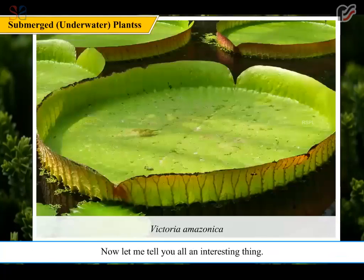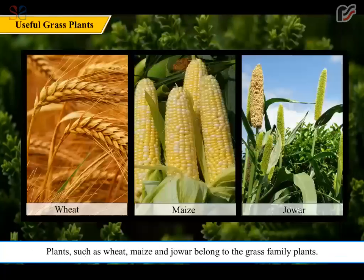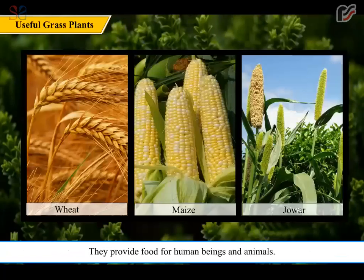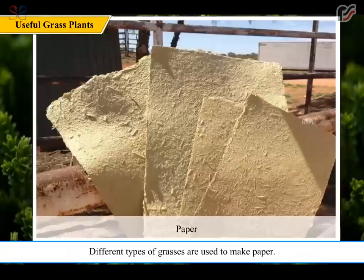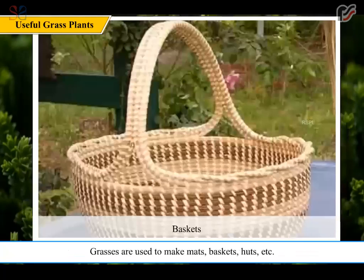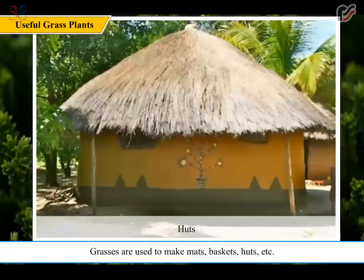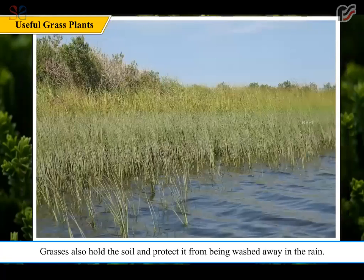An interesting fact: the aquatic plant having the biggest leaf is Victoria amazonica. Plants such as wheat, maize, and jowar belong to the grass family and provide food for human beings and animals. Different types of grasses are used to make paper, mats, baskets, and huts. Grasses also hold the soil and protect it from being washed away in the rain.